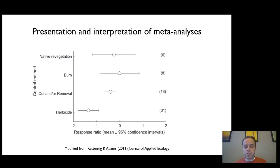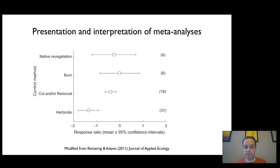The presentation of meta-analyses usually looks something like this. In this case this is a plot showing the effect of different interventions on invasive plant abundance. As you can see, herbicide is the one that has the greatest effect in terms of reducing invasive plant abundance.